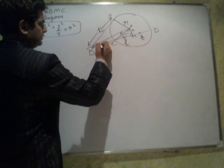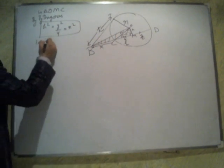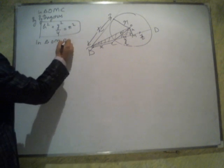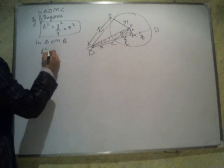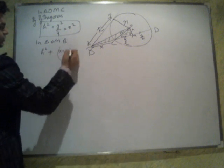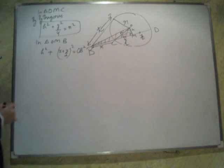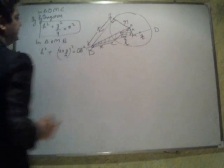If you use this triangle, in triangle O, M, B, H square plus X plus Y by 2 square seems to be OB square. This is 90 degree as well.